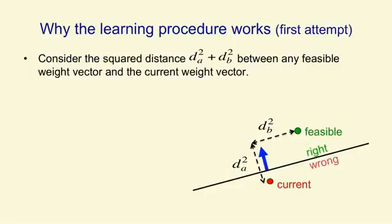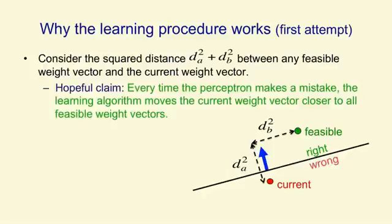We start with a weight vector that's getting some of the training cases wrong, and in the diagram we've shown a training case that it's getting wrong. The idea for the proof is that every time it gets a training case wrong, it will update the current weight vector in a way that makes it closer to every feasible weight vector. We can represent the squared distance of the current weight vector from a feasible weight vector as the sum of a squared distance along the line of the input vector that defines the training case, and another squared distance orthogonal to that line. The orthogonal squared distance won't change, and the squared distance along the line of the input vector will get smaller. So our hopeful claim is that every time the perceptron makes a mistake, our current weight vector is going to get closer to all feasible weight vectors.